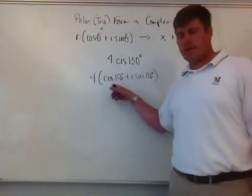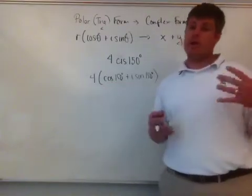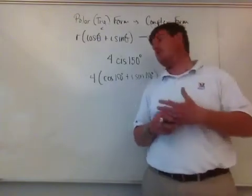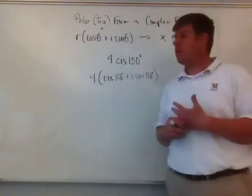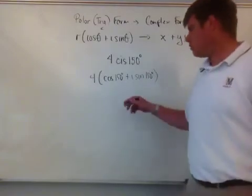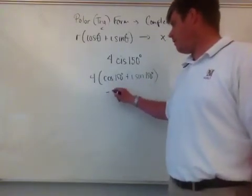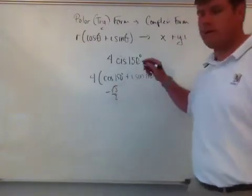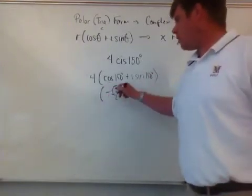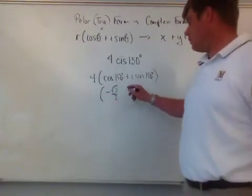So this one here, its reference angle is 30 degrees. So what's the value of cosine of 30 degrees? It happens to be root 3 over 2, so this is going to be negative root 3 over 2 because 150 degrees is in the second quadrant. The quadrants do matter for your signs of these things.